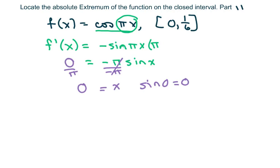Since we already have zero as our left endpoint, we're not going to consider that. We're just going to consider our left endpoint and our right endpoint, and plug those in.